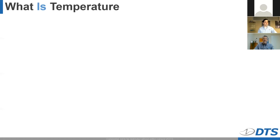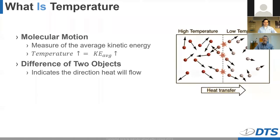So what is temperature? We can think of it in two basic concepts. First, temperature gives an understanding of molecular motion, measuring the average kinetic energy of the particles in an object. As the temperature of that object rises, so does the average speed of its particles. It can also give an understanding of the difference between two objects in terms of which direction heat will flow. Temperature is therefore a helpful data point as it also implies how an object might affect the materials immediately surrounding it, particularly those in direct contact.